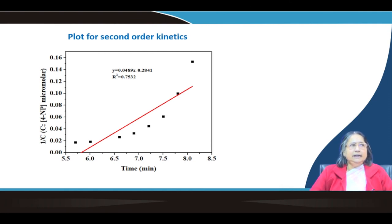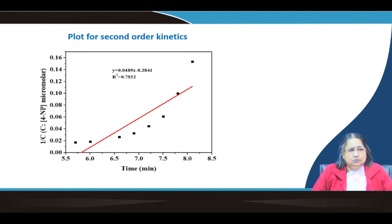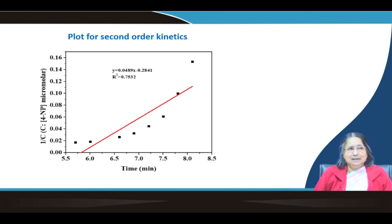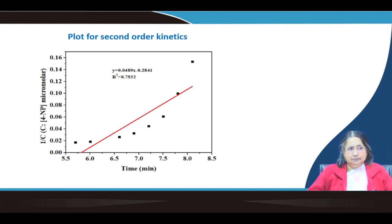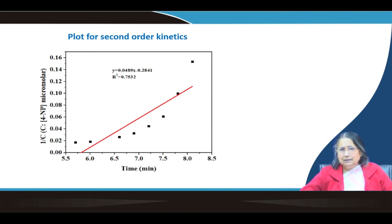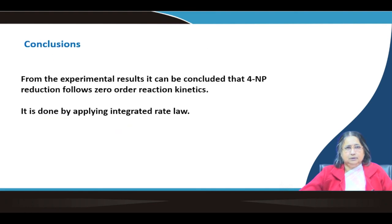You may ask why we need to know the order. The order of a reaction is very important — along with rate, it characterizes the reaction and you will see later how it helps. By using a simple spectrophotometer, you can determine the order of a reaction practically. You have also learned how to do the calibration curve, what is the Beer-Lambert law, and what are the main components of a spectrophotometer. This is one good example of how to determine the order for a particular reaction.